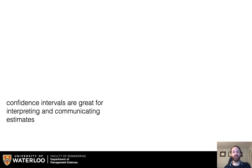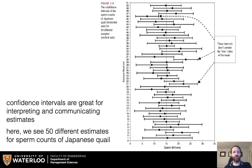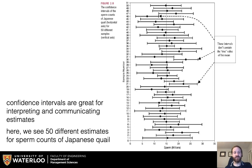Confidence intervals are great for interpreting and communicating estimates. Here we see 50 different estimates for spurn counts of Japanese quail. Some of them aren't going to have the mean, so there will occasionally be an error if you do enough of these confidence intervals. But that error is relatively small and corresponds to the percentage of confidence we have — so if we're doing 95% confidence, then 95% of these confidence intervals should line up with the true mean.